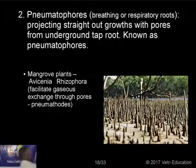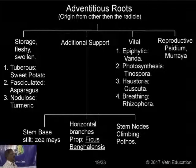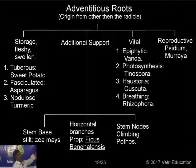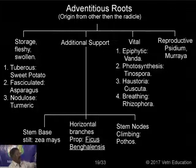The adventitious roots are classified into four types. The first is storage by adventitious roots. Previously we studied storage by tap roots; here, storage is by adventitious roots. Sometimes adventitious roots give additional support, vital functions, and reproductive function.